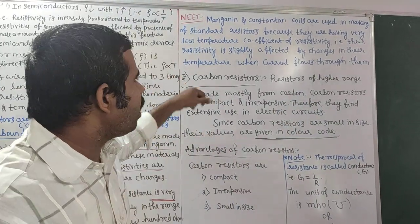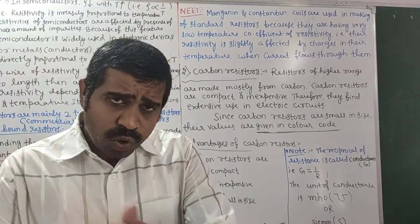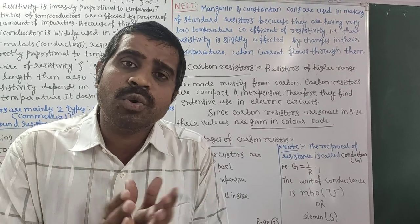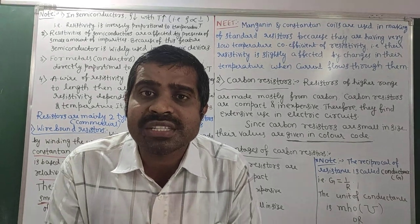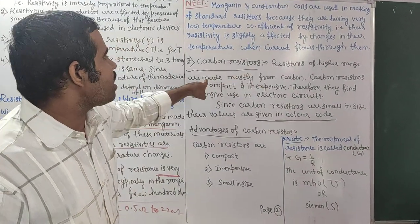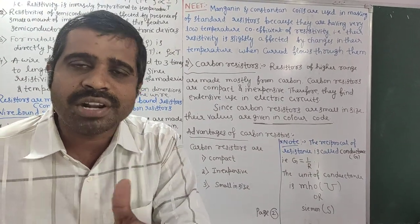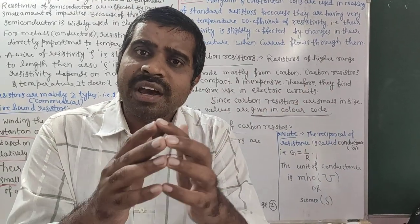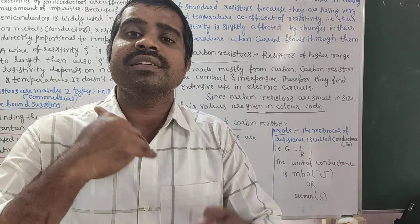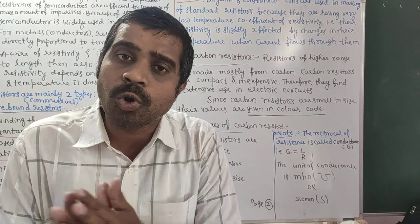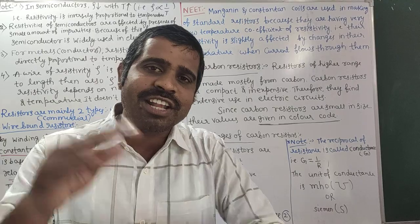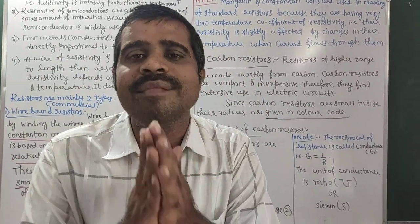Now the second type of resistors: carbon resistors. When you want higher values of resistance, you use carbon resistors. Carbon resistors of higher resistance are made mostly from carbon. The difference between resistance and resistor: resistance is a property, while a resistor is a device which offers resistance. Wire-wound resistors give a few fractions of an ohm to a few hundred ohms; for values of 2,000, 5,000, or 10,000 ohms, you go with carbon resistors.